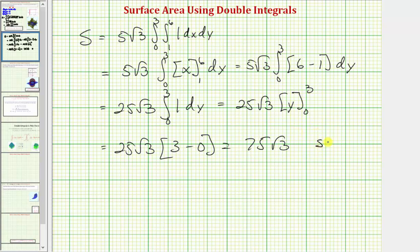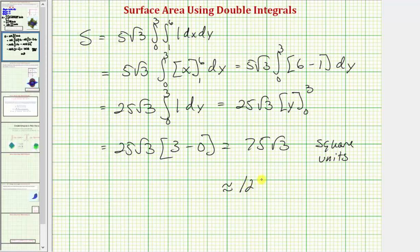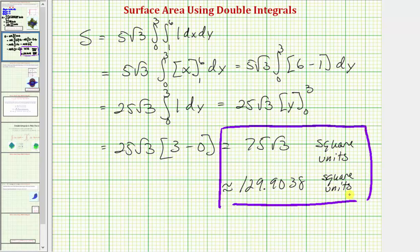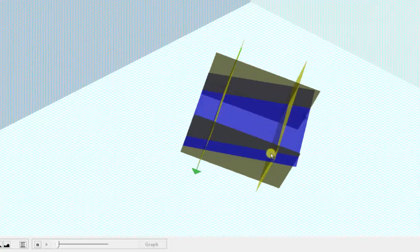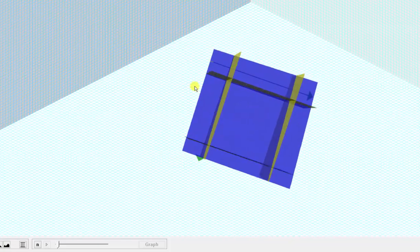And this would be in square units. Let's also get a decimal approximation: 75 square root of three is approximately 129.9038 square units. So again, we just found the surface area of this blue plane over the rectangular region in the xy plane shown here. I hope you found this helpful.